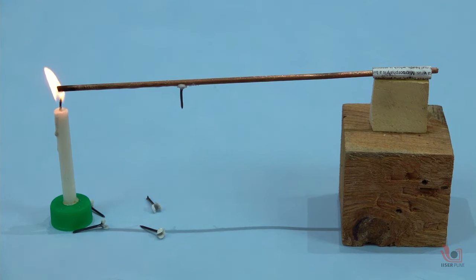When we provide heat to one end of the copper rod, the wax used to fix the nails melts down and hence the nail falls off. The copper rod gets heat from the candle and this heat transfers from the hotter end of the copper rod to the colder end of the copper rod.